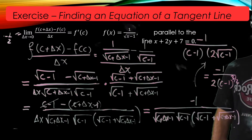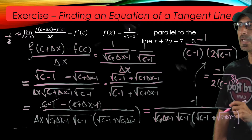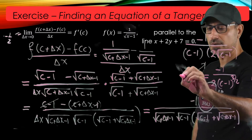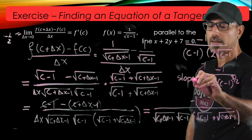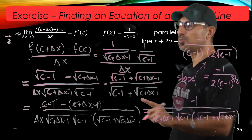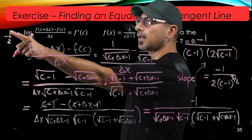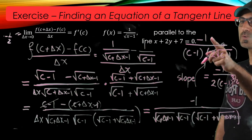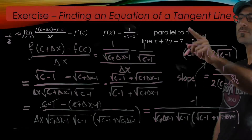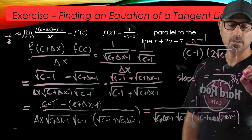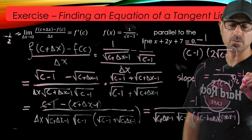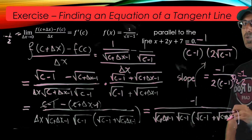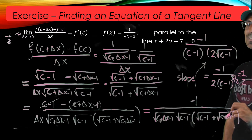This quantity is the slope of the tangent line to the curve 1 over radical(x minus 1) at point c. This is the slope, and I want it to equal negative one-half, which was the slope of the given line. So I'll set negative 1 over 2(c minus 1)^(3/2) equal to negative one-half and solve for c.